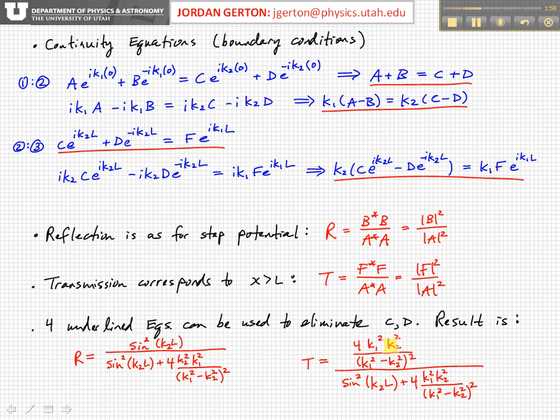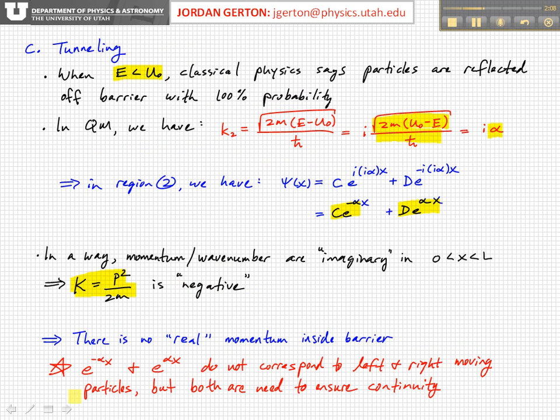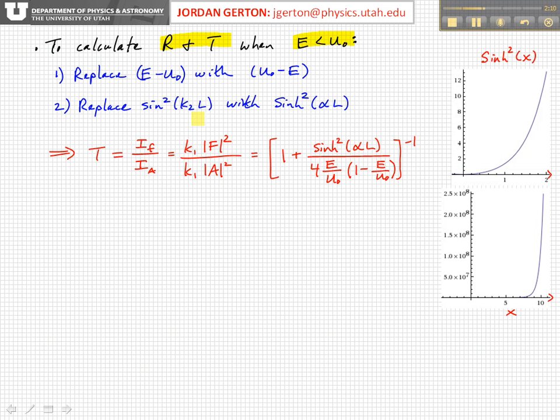Here we've kept them in terms of k₁ and k₂, but we could write them, because k₁ and k₂ are functions of E and U₀, we could write them as a function of E and U₀. And if we do that, and then we replace, wherever we see E minus U₀, we replace that with U₀ minus E.